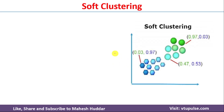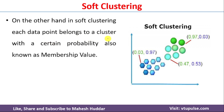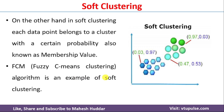The second one is a soft clustering algorithm. In this case, each data point belongs to clusters with a certain probability, also known as membership values. If you notice this example, this particular green data point belongs to this cluster with a probability of 0.97 and it belongs to the second cluster with a probability of 0.03. The meaning is this data point belongs to both clusters. Fuzzy c-means clustering algorithm is an example of a soft clustering algorithm.